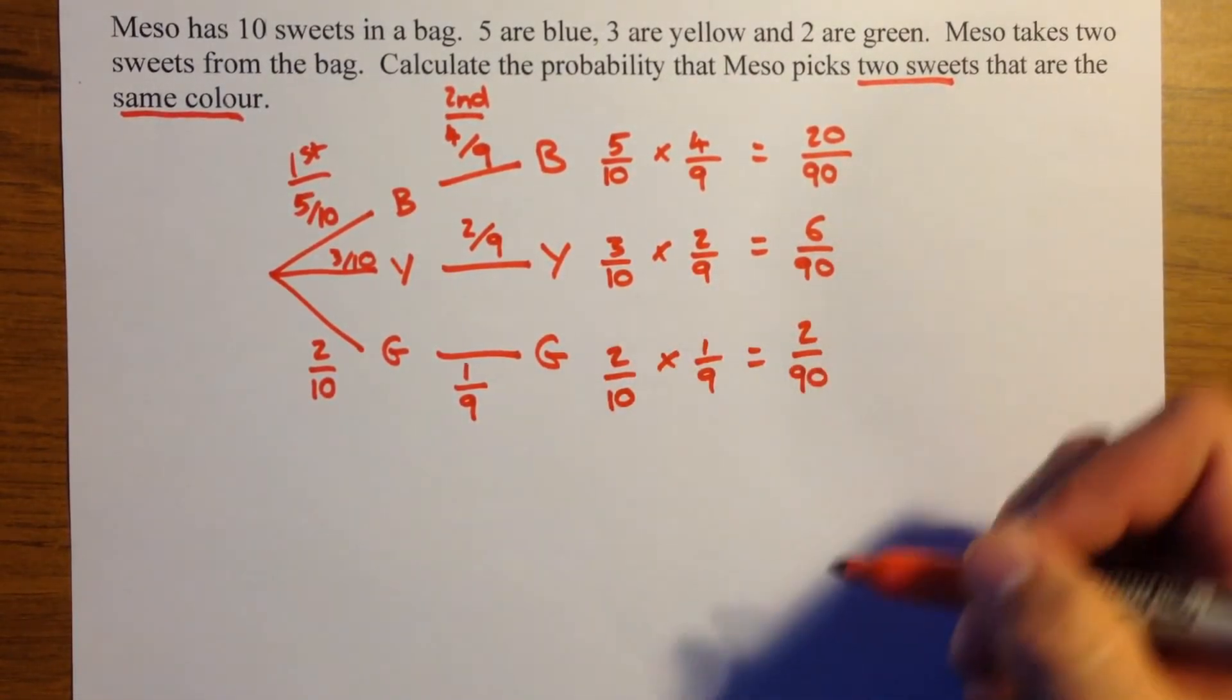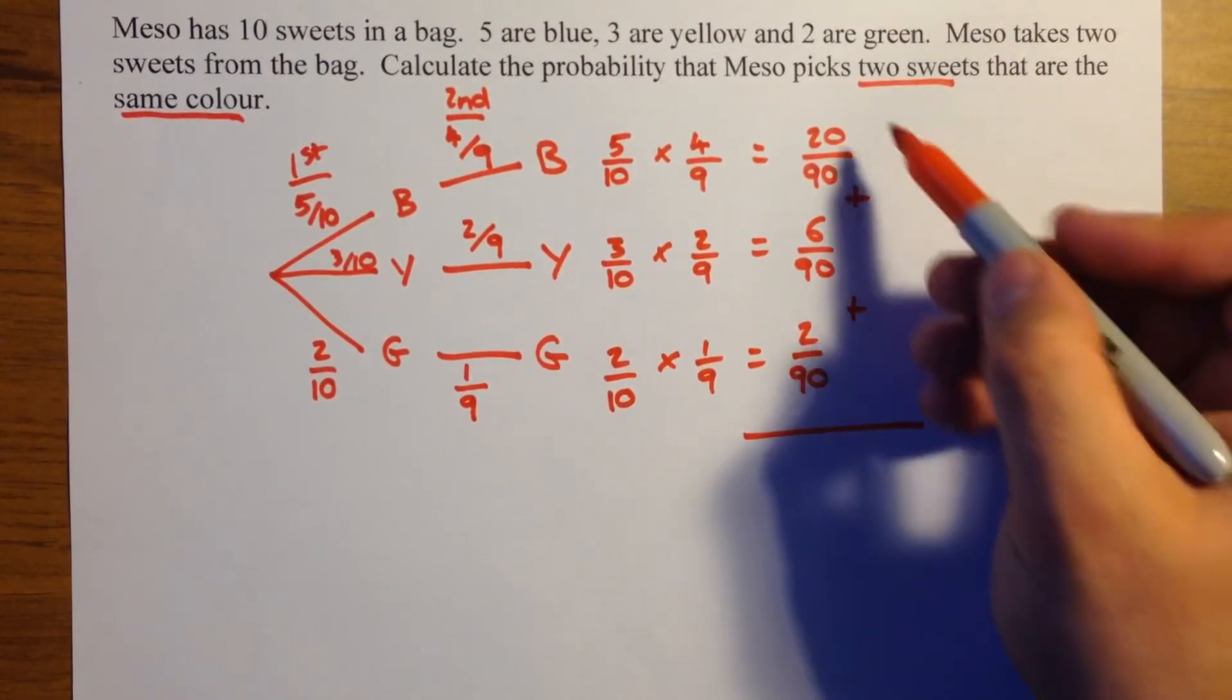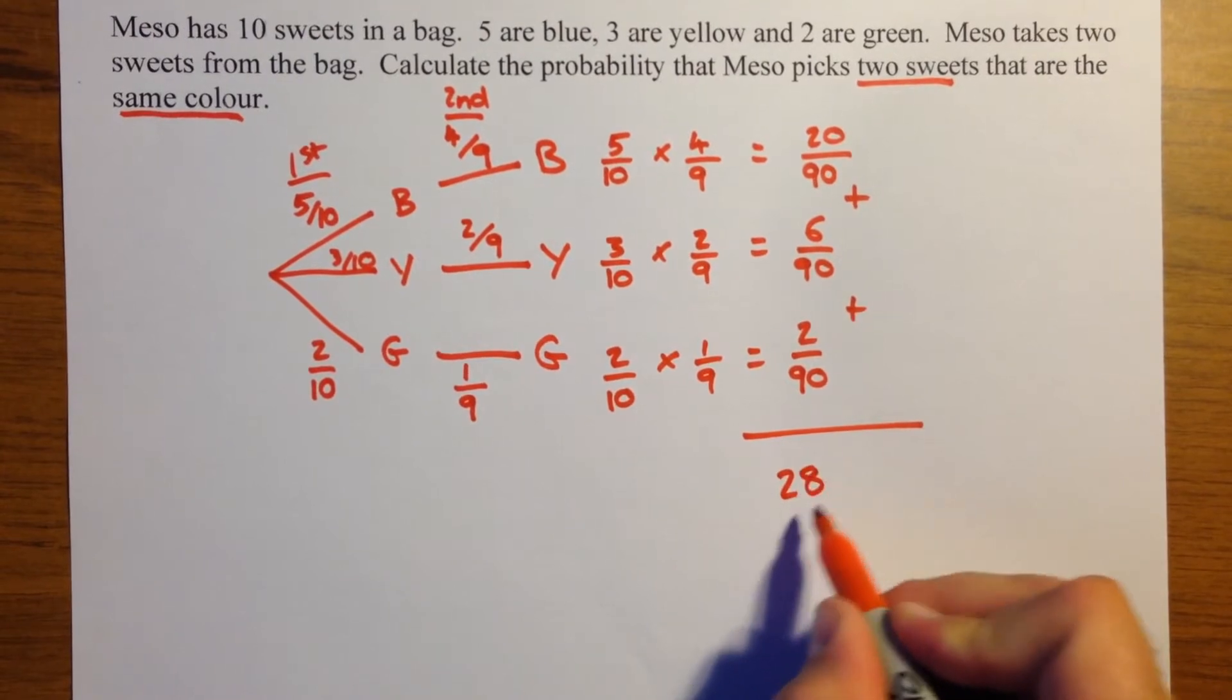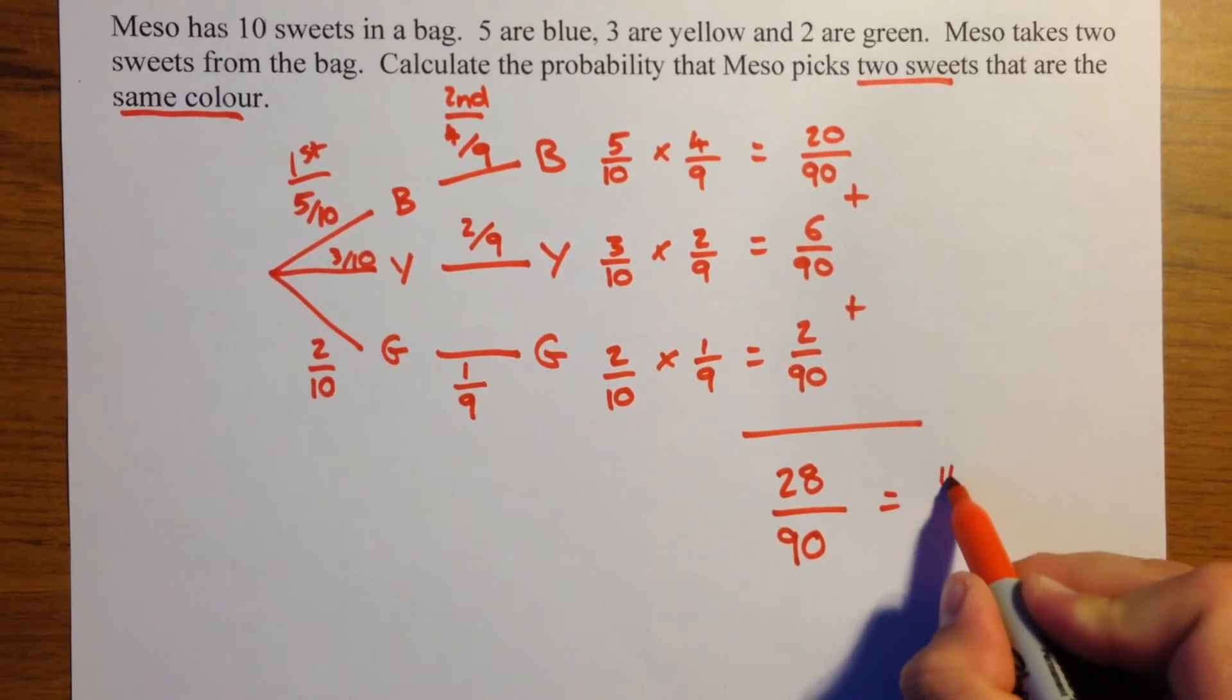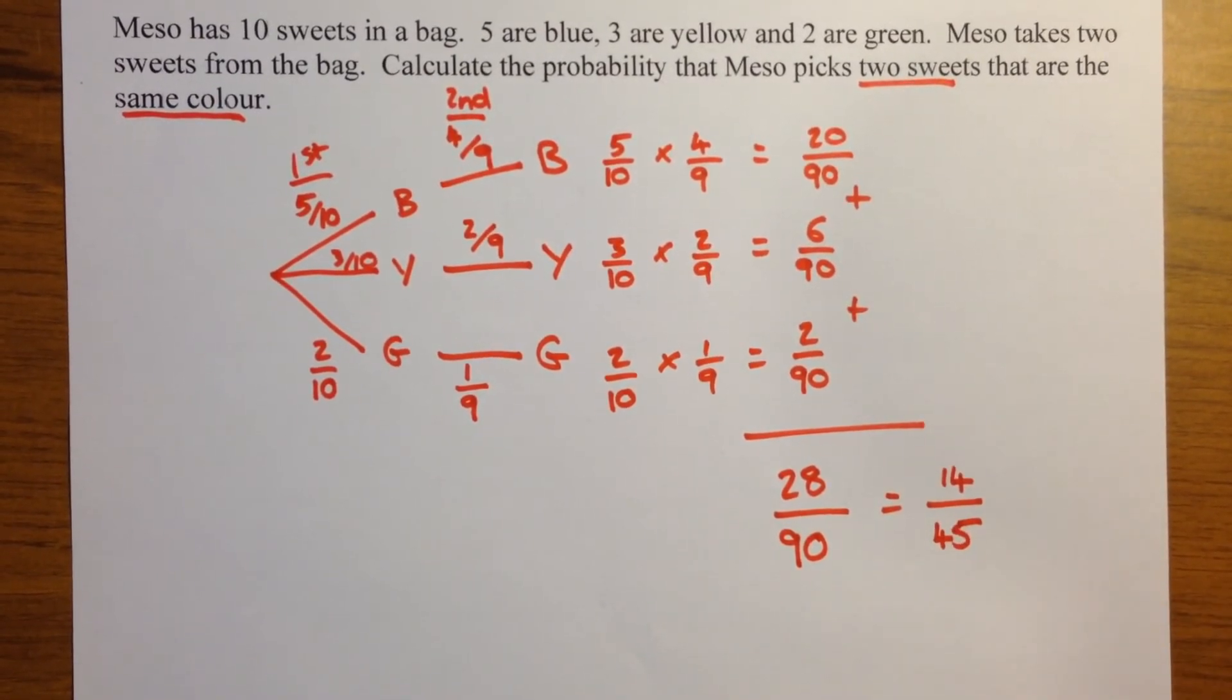Now, we want all these probabilities added together, so we'll add them up, twenty, add six, add two, gives us a total of twenty-eight ninetieths, which we could cancel down to fourteen forty-fifths.